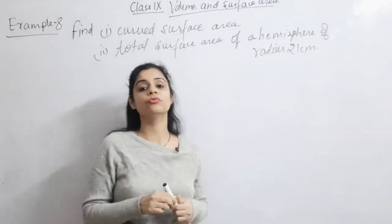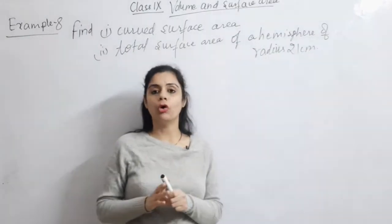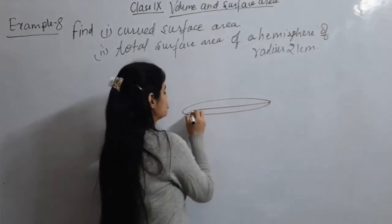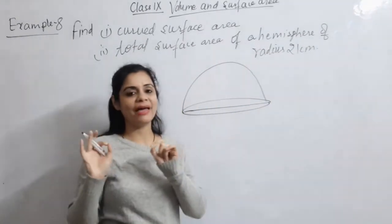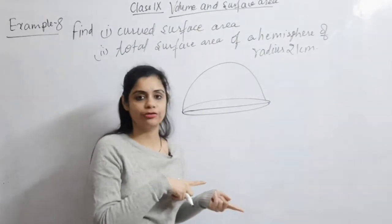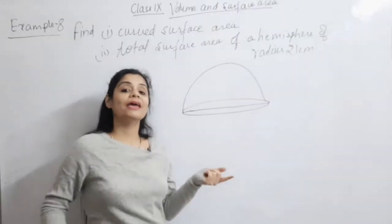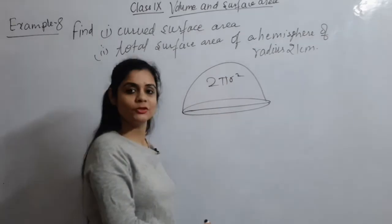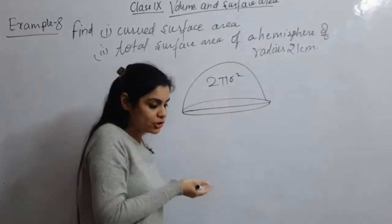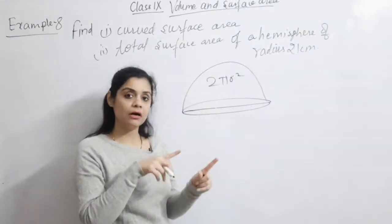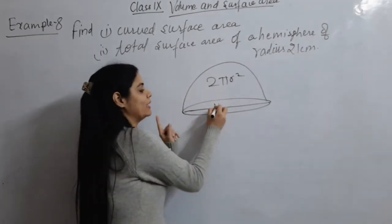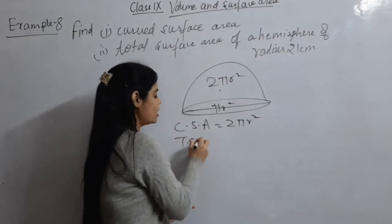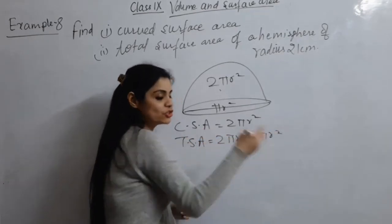Next is Example 8, which is on a hemisphere. For a hemisphere, there are three formulas: volume = 2/3 π r³, curved surface area = 2 π r², and total surface area = 2 π r² + π r². The curved surface area is only 2 π r², and for total surface area we add π r², which accounts for the circular base.